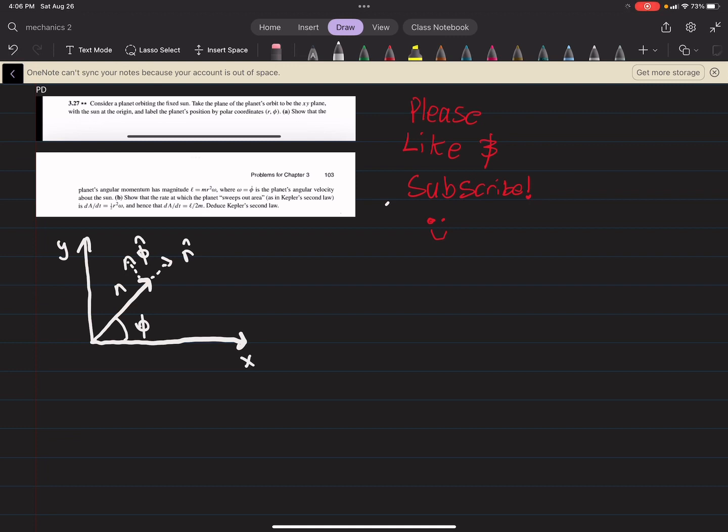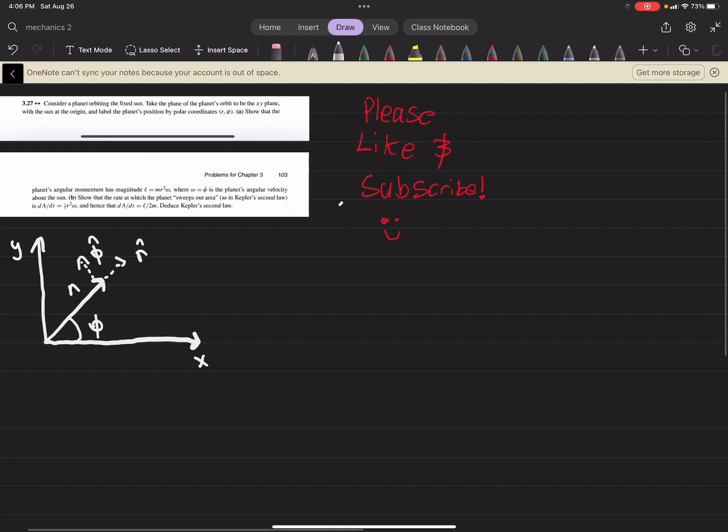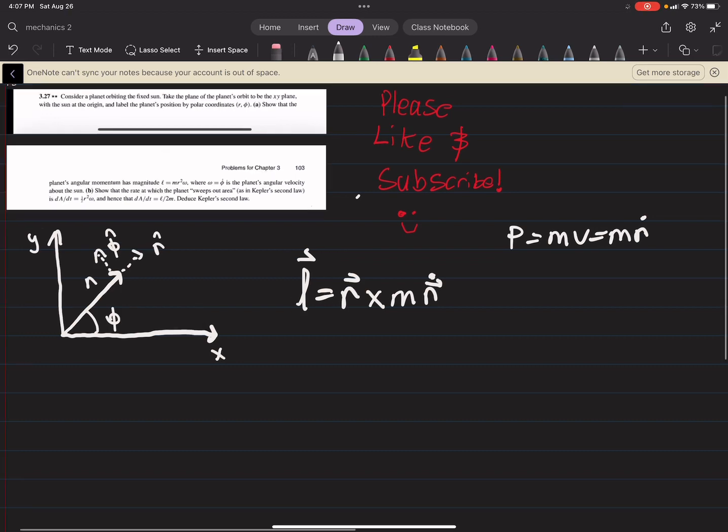Okay. So, we're going to start with this, and the equation L is r cross p, but p momentum is m v, or in this case, m r dot. Okay. So, we can say this is m r dot. These are all vectors. I might be a little lazy with my vector notation, but it's fine.